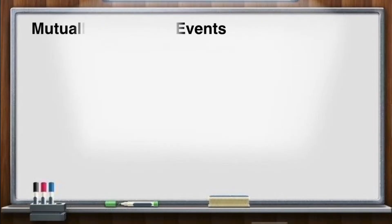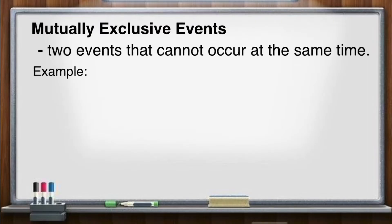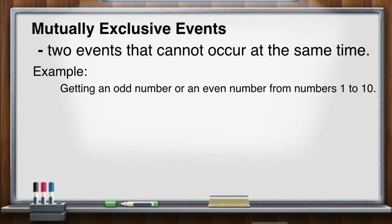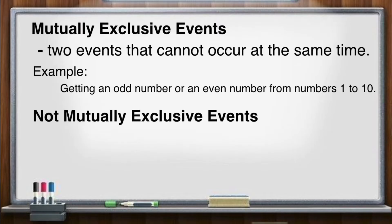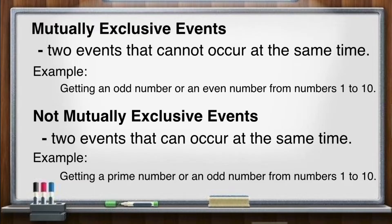So let's start with mutually exclusive events. These are two events that cannot happen at the same time. For example, getting an odd number or an even number from numbers 1 to 10. For not mutually exclusive events, these are two events that can happen at the same time. For example, getting a prime number or an odd number from numbers 1 to 10.